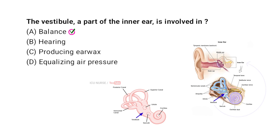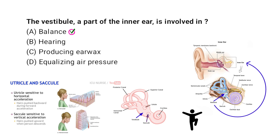The vestibule is a central part of the inner ear. It plays a key role in maintaining balance and spatial orientation. Inside the vestibule are two important structures: the utricle and the saccule. These structures contain sensory receptors that detect changes in head position and movement.